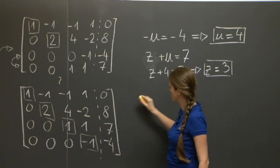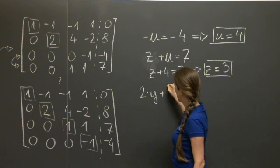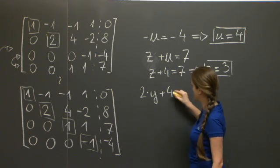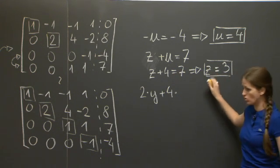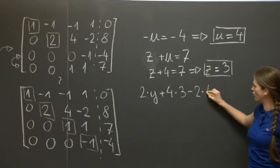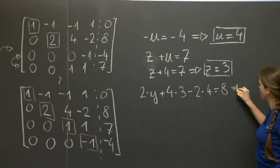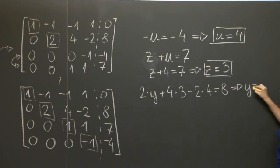The second equation is 2 times y plus 4 times z, but z is 3, minus 2 times u, but u is 4, equals 8. And from this one can easily compute that y is equal to 2.